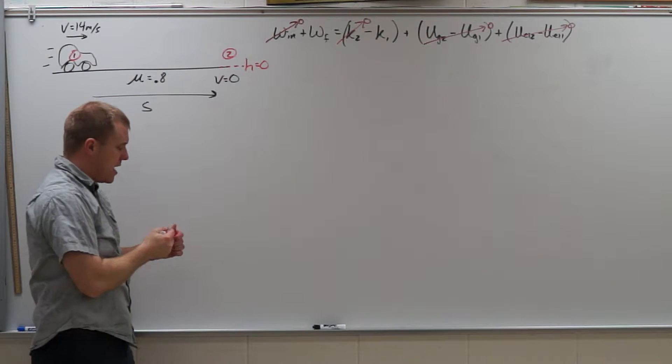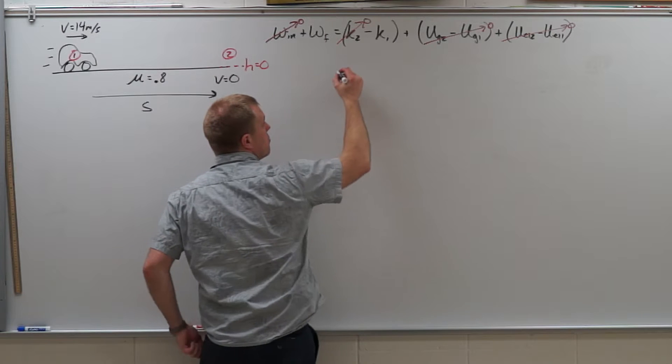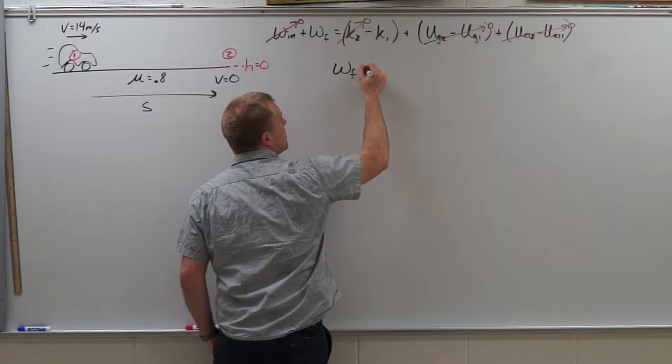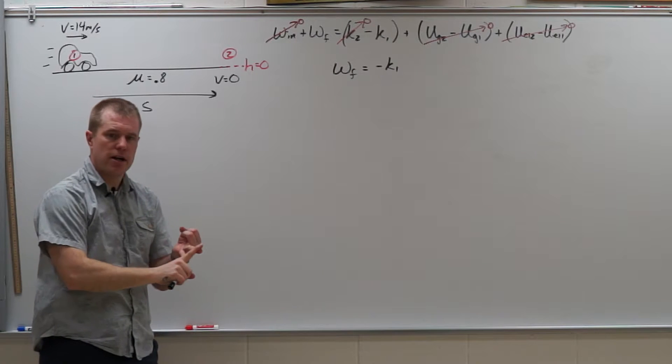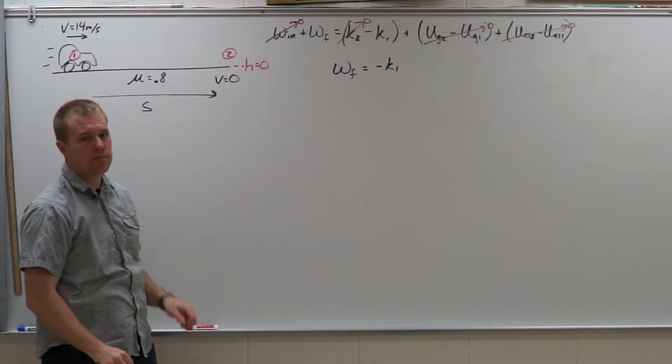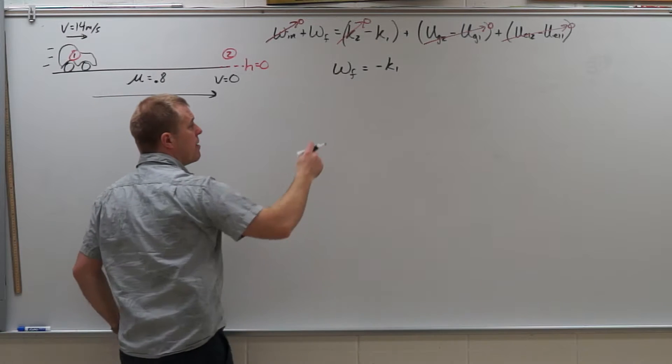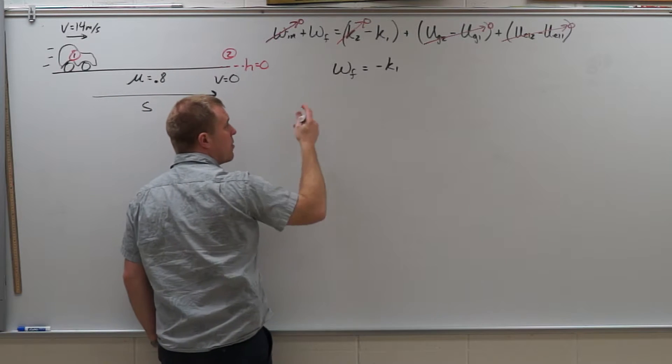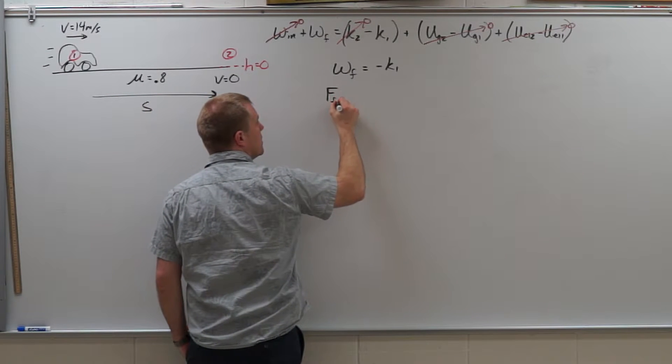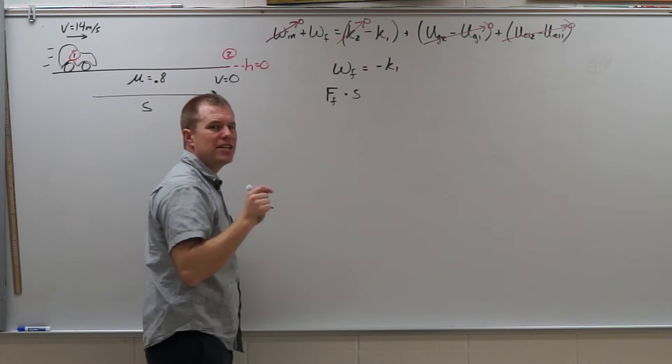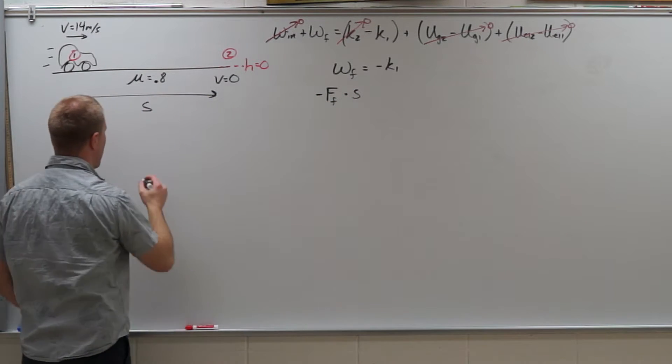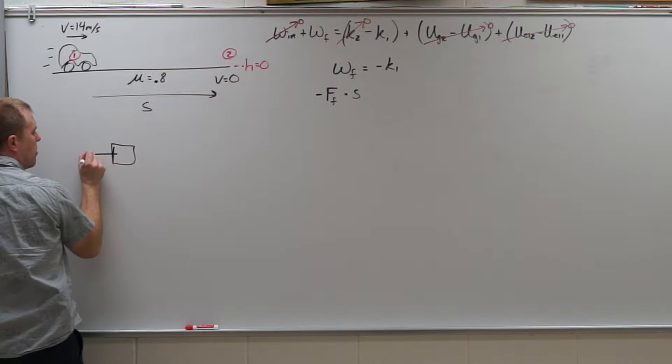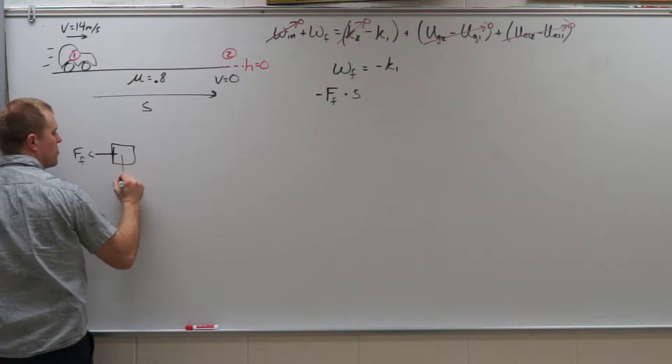So I can reduce my equation down to work done by friction equals negative k1. I'm not trying to find work done by friction. I'm not trying to find k1, so I'm going to substitute for those. Now if you'll remember, work done by friction is going to be the force of friction times the displacement.